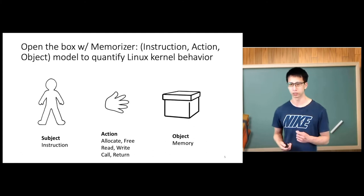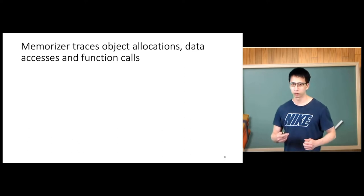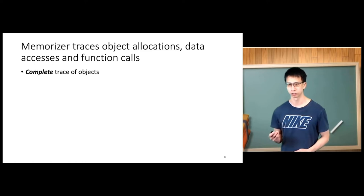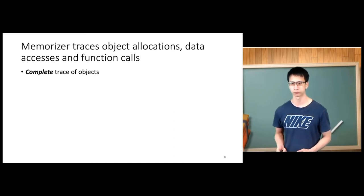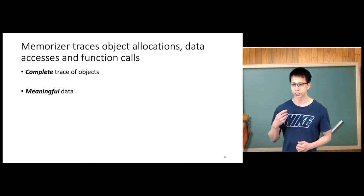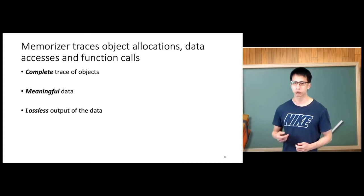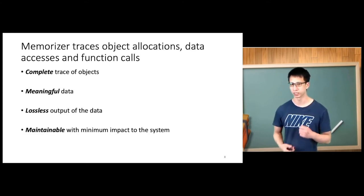The object here is a memory chunk. In Memorizer, we want to trace object allocations, data accesses, and function calls. The design goal is to have a complete trace of every kernel object allocated. We want the data to be meaningful, representing the kernel information. Because our data has huge size, we need the output to be useful.